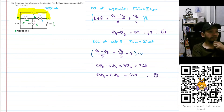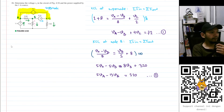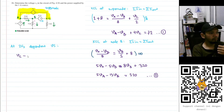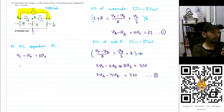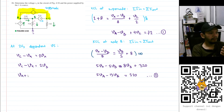We have two equations but three unknowns — Va, Vb, and Vc — so we need one more equation. Looking at the 2·Vx dependent voltage source, the difference between Vc and Va must equal 2·Vx. Since Vx equals Vb (Vb is referenced to ground), we get Vc − Va = 2·Vb, or rearranged: Va + 2·Vb − Vc = 0. This is equation number three.